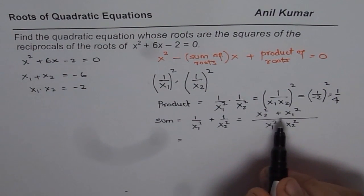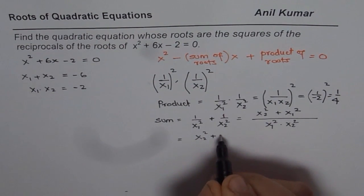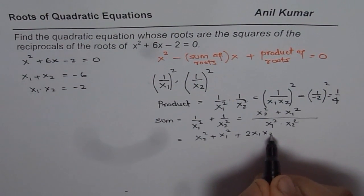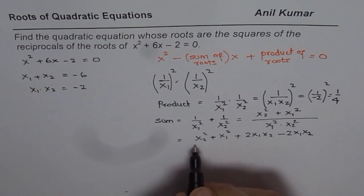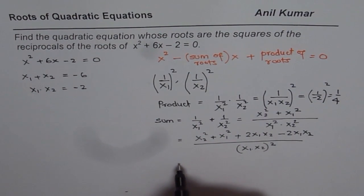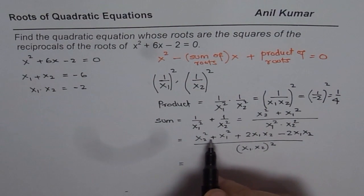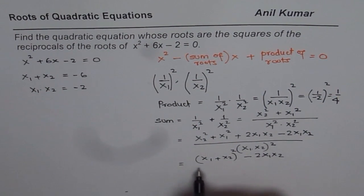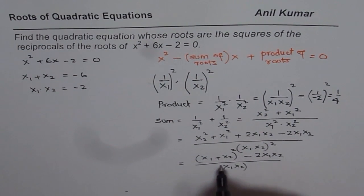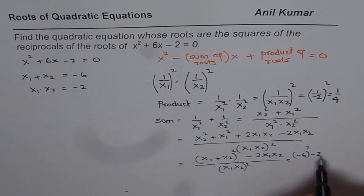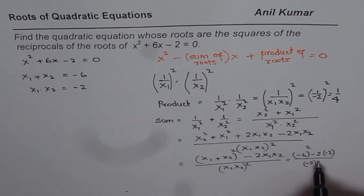To make the numerator a perfect square, we add and subtract 2·x1·x2. So the numerator becomes x1 squared plus x2 squared plus 2·x1·x2 minus 2·x1·x2, and the denominator is (x1·x2) whole squared. We can now write the first three terms as (x1 plus x2) whole squared, giving us (x1 plus x2) squared minus 2·x1·x2, all over (x1·x2) squared.